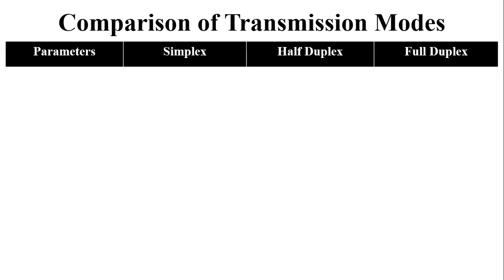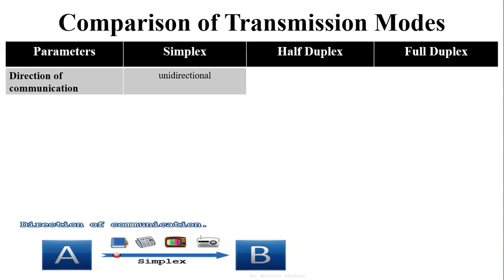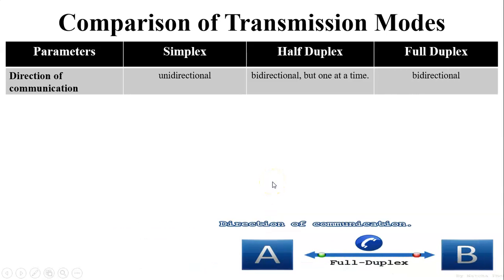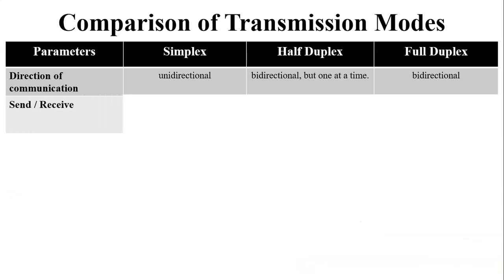The first parameter for comparison is direction of communication. In simplex mode, it is unidirectional — user A will only send the data to user B; user A is the sender and B is only the receiver. In half duplex mode, it is bidirectional but only one at a time: if A is the sender, then B is only the receiver, and vice versa. In full duplex, it is bidirectional — A and B both send and receive data at the same time.